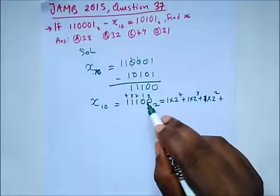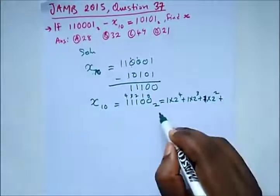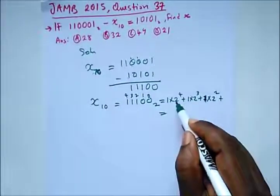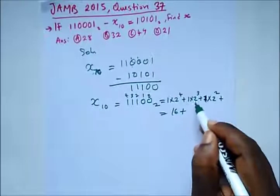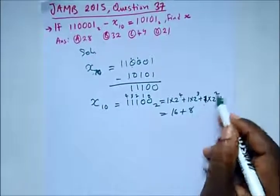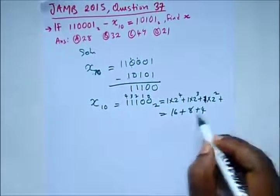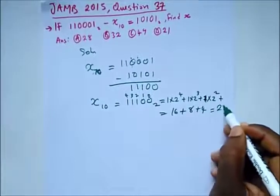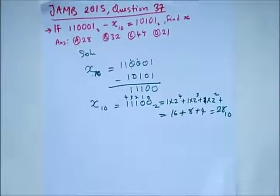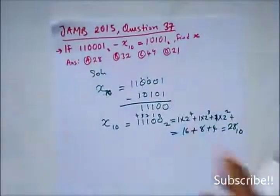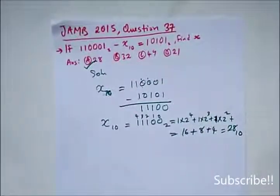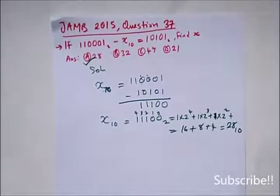These are 0 so the answer will be 0, so let's just simplify this. 2 raised to power 4 is 16 plus 2 raised to power 3 is 8, 2 times 2 that's 4, and when you add this together we have 28 base 10 and our correct option here is option A. Thank you for staying tuned to Destined to Win Tutorials.